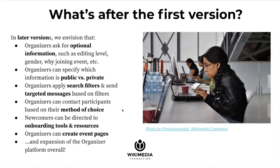Some things we envision for later releases: the ability for organizers to ask for optional information such as editing level, gender, and why participants are joining. Organizers can specify which information is public versus private, apply search filters in the participant list, and send targeted messages. Organizers can contact participants by their method of choice. Newcomers can be directed to onboarding tools before the event so they're more prepared when the campaign starts. There'll also be a standardized UX redesign for event pages and other expansions of the organizer platform.